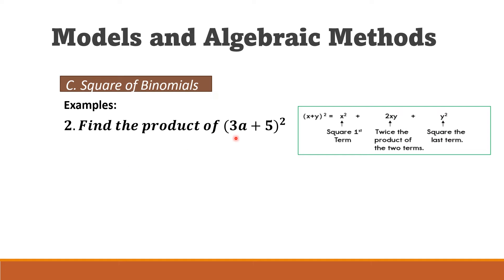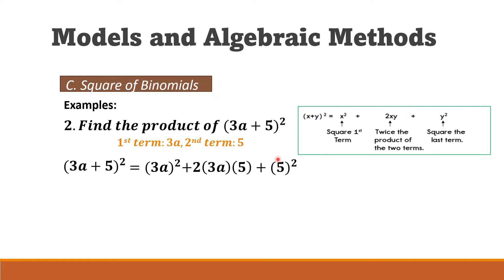Example two: (3a + 5)². The first term is 3a and the second term is 5. Squaring 3a gives 9a², 2 times 3a times 5 gives 30a, and 5² gives 25. So the answer is 9a² + 30a + 25.